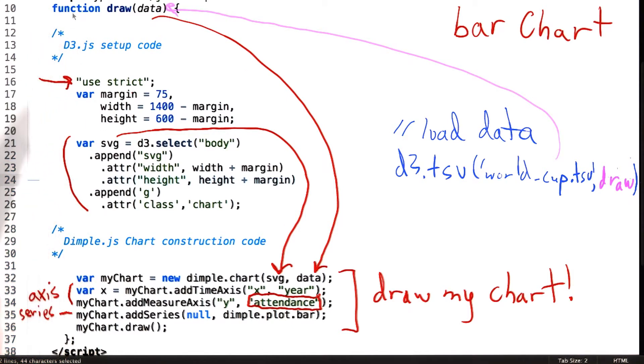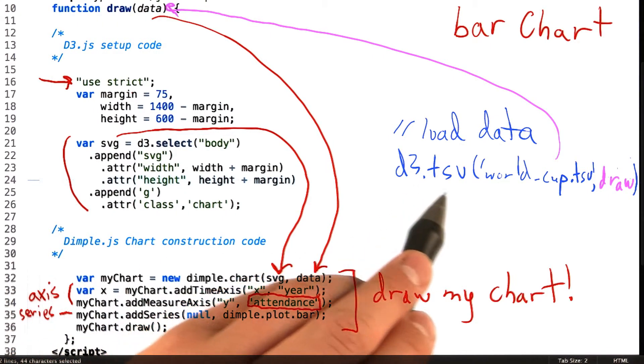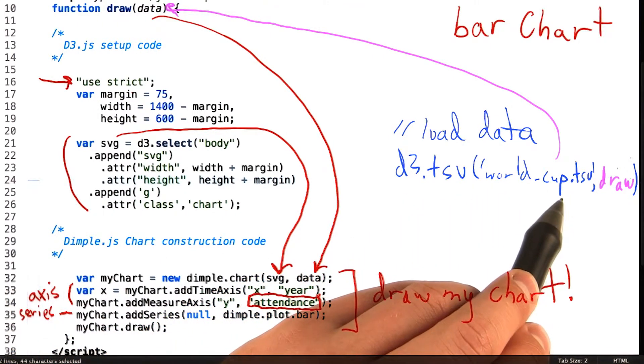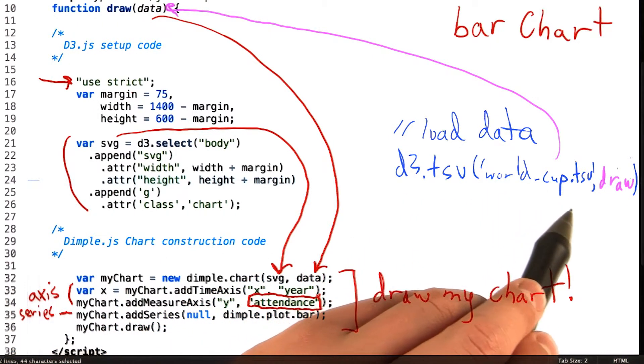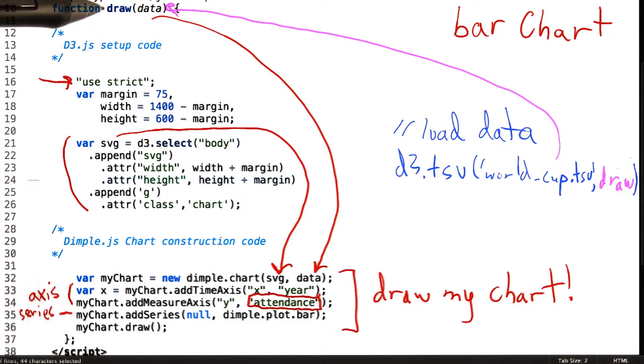The flow, which sometimes takes some getting used to, is a call to D3.tsv, passing it a data file. Once loaded, the data file gets passed to draw, which we see here in our callback function.